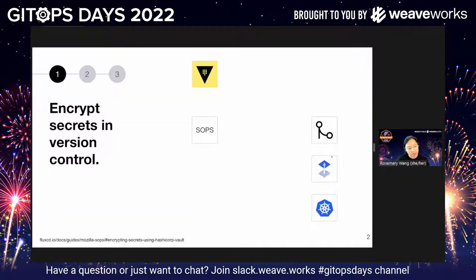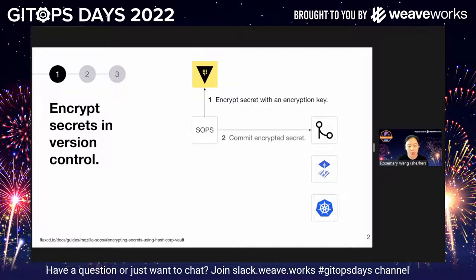It's typical, at least within the Flux guidance, to encrypt the secrets in version control. So you encrypt the secret with an encryption key using SOPs, for example. You commit the encrypted secret and then Flux decrypts the secret and Flux creates the Kubernetes secret for use.